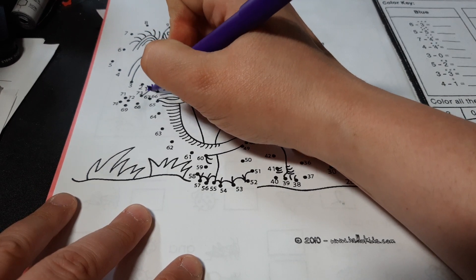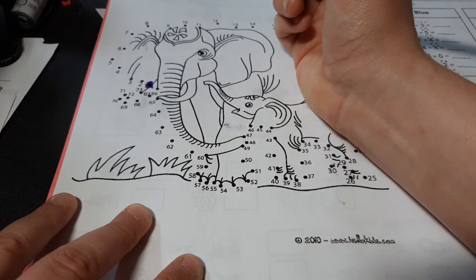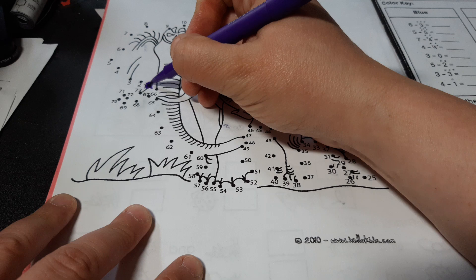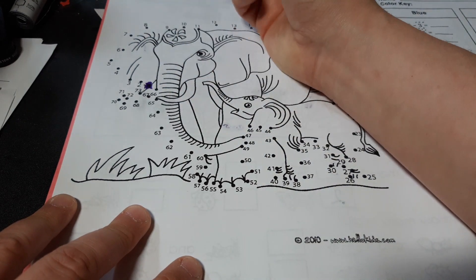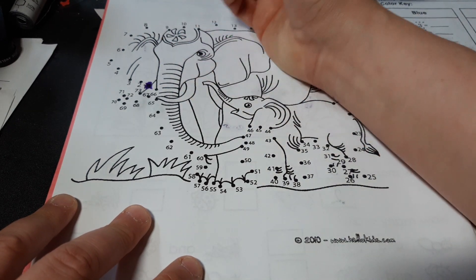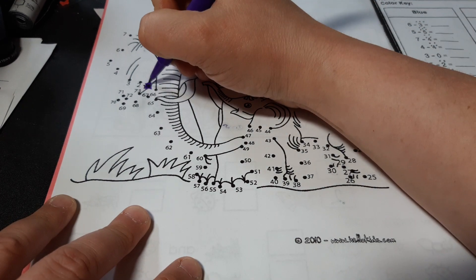Here is number one, right here. Made that kind of big, so you can see number one by the tusk. And then you're just going to keep counting and connecting the dots until you have the whole elephant.